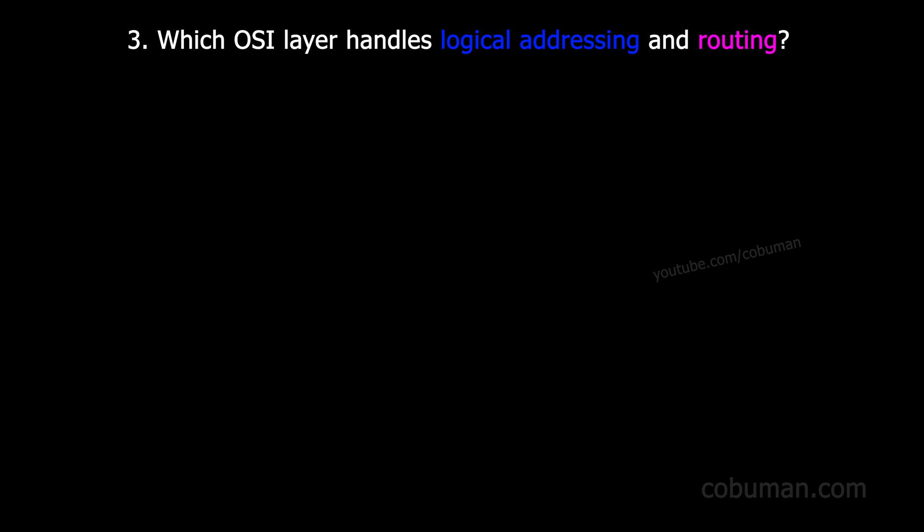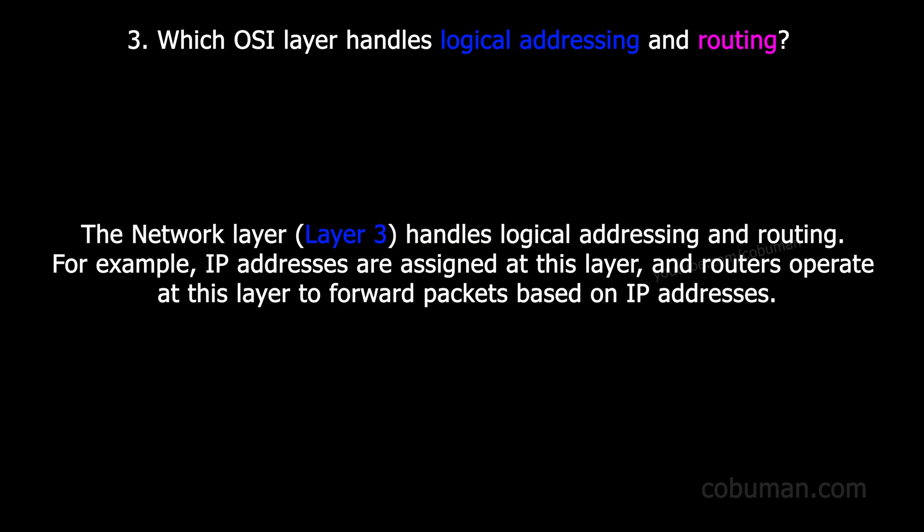Question number three: which OSI layer handles logical addressing and routing? That would be the network layer — layer three. It handles logical addressing and routing. For example, IP addresses are assigned at this layer and routers operate at this layer to forward packets based on IP addresses.